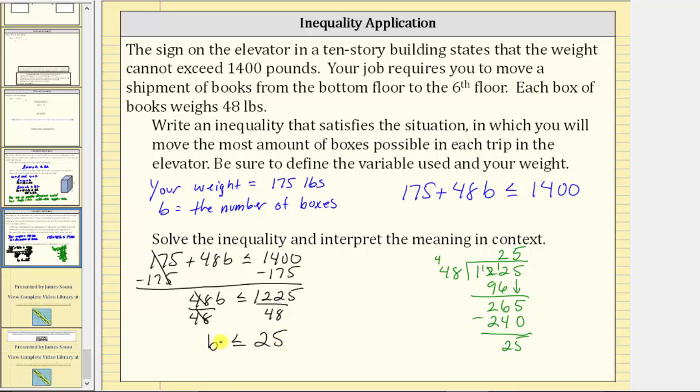We also know b, the number of boxes, must be greater than or equal to zero, again because of the application. But to answer the question, you want to move the most amount of boxes possible in each trip, which means the greatest value of b that satisfies the inequality is when b is 25. You can move at most 25 boxes at a time in the elevator.